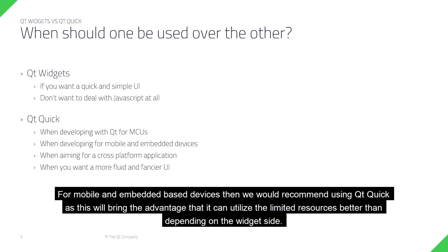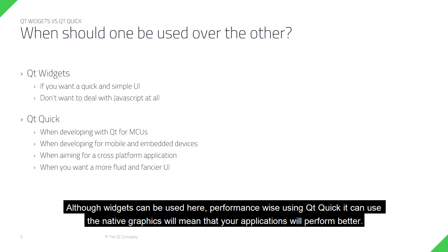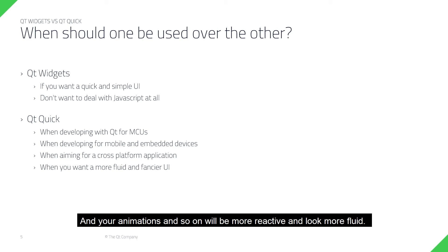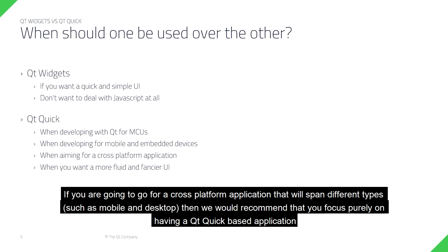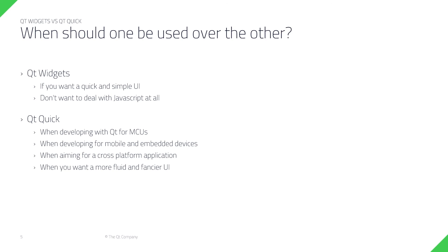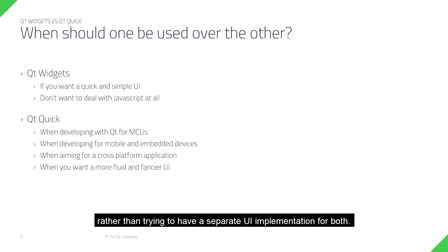For mobile and embedded devices, we would recommend using Qt Quick, as this will bring the advantage that it can utilise the limited resources better than depending on the widget side. Although widgets can be used here, performance-wise Qt Quick can use the native graphics, which will mean that your applications will perform better and your animations will be more reactive and look more fluid. If you are going for a cross-platform application that will span different types such as mobile and desktop, then we would recommend focusing purely on a Qt Quick based application rather than trying to have a separate UI implementation for both.